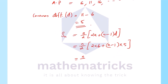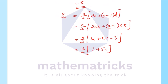That is equal to n by 2 into 2 into 6, that is 12, plus bracket n minus 1 into 5. That gives n by 2 into 12 plus 5n minus 5, which is n by 2 into 7 plus 5n. Therefore, the sum of n terms of the AP equals n by 2 into 7 plus 5n.